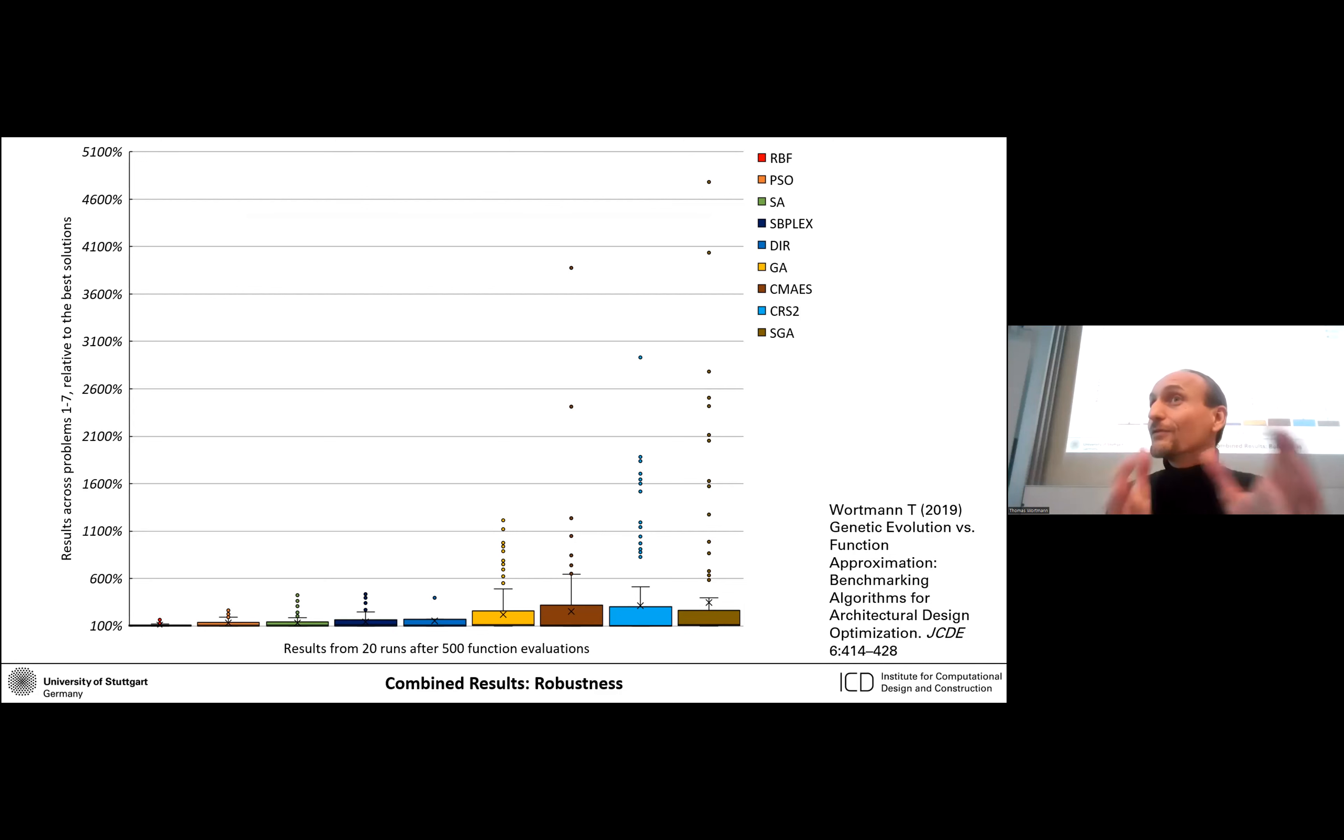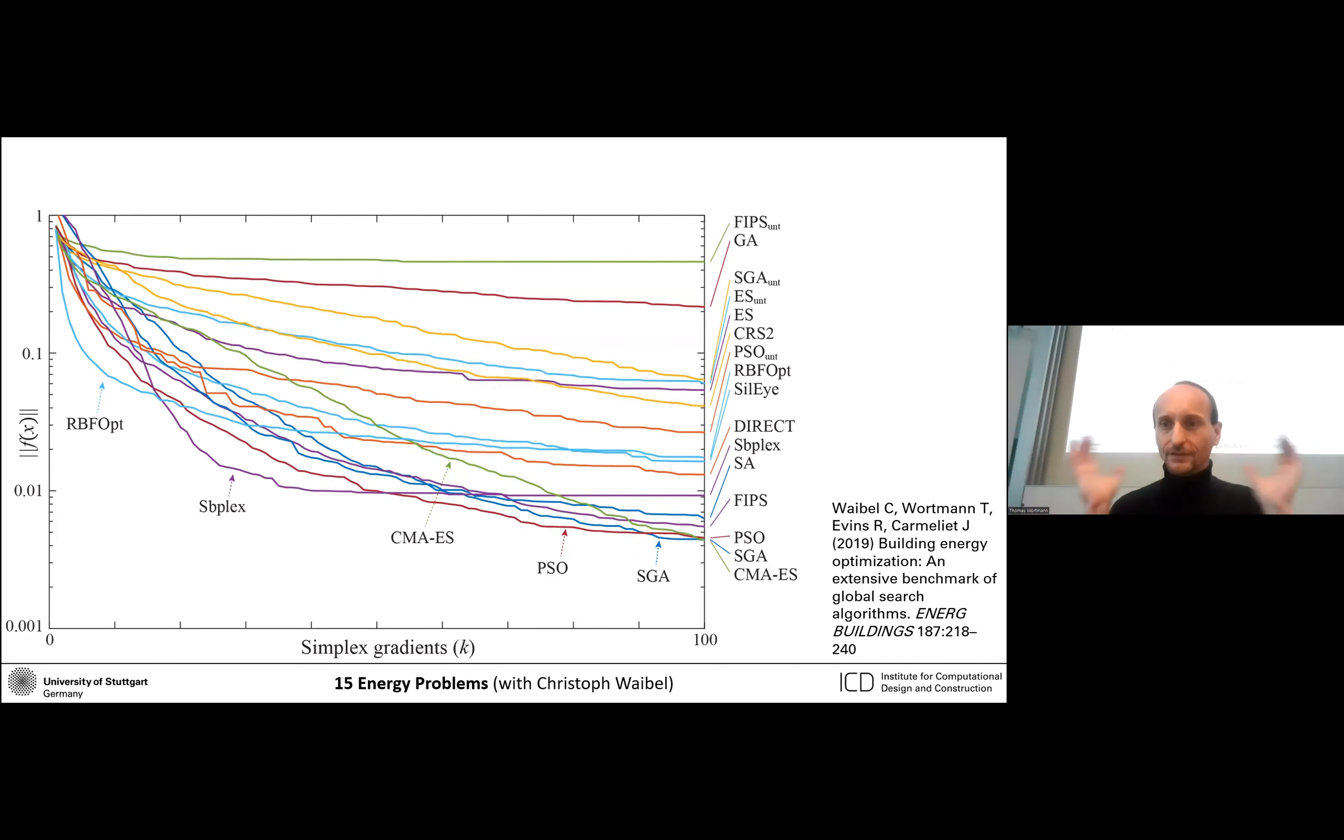You're not going to do this experiment where you run five, ten times and then compare whether you have a spread. So in this scenario the RBF is the most reliable. Then also the particle swarm for example is also fairly robust here. Then I did in a sense even more extensive study together with Chris where we look at 15 different energy optimization problems. As you can see, even more algorithms, more extensive data. Also this is now according to simplex gradients where a simplex gradient is roughly the number of variables of the problem. So if the problem is very large, has a lot of variables, then you're also allowed to do more steps. What you can see here now is that in the beginning, if you don't take many steps, as before, RBF is the best. If you allow the algorithms to take more steps, then other algorithms will become better.